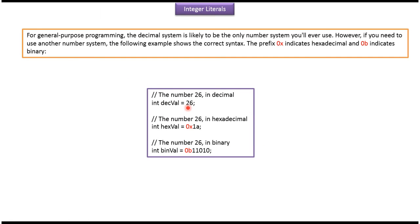Here you can see how to define decimal number system, and here you can see how to define hexadecimal number system. Here 0x indicates hexadecimal, and here you can see how to define binary number system. Here 0b indicates binary number system.